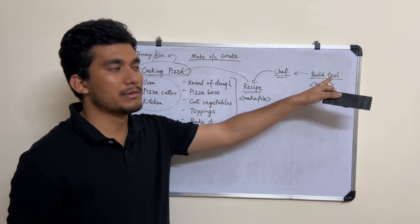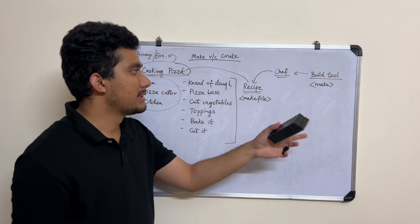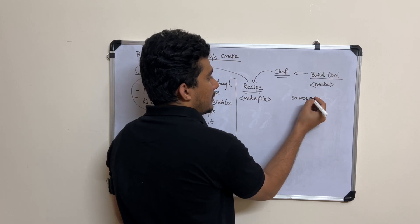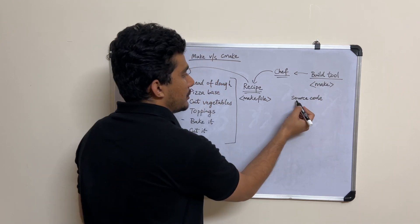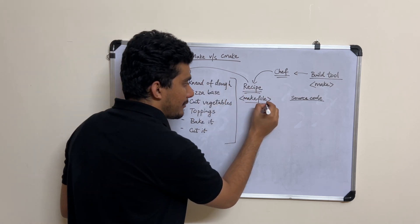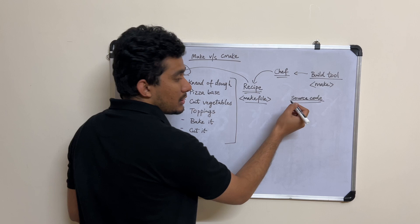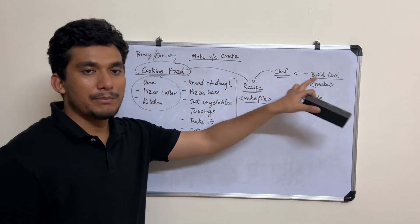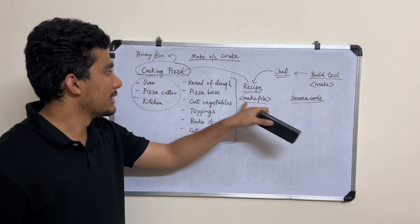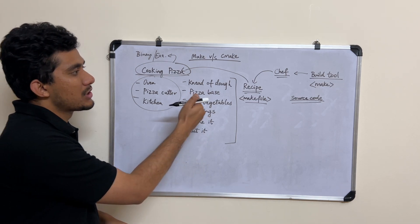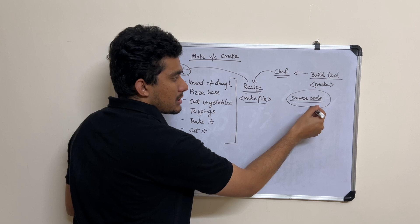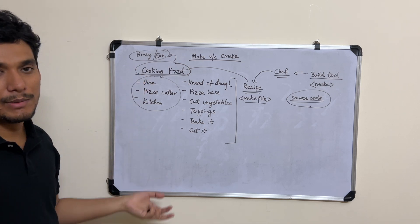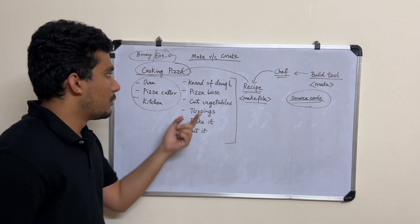Make is just a build tool — an automated tool used for building your projects. You have your source code, and you give instructions in a file called a Makefile on how to use the source code and how to get the binary up. It's a build tool which uses a Makefile containing instructions to convert the source code into your executable or binary — or it can also be libraries, depending on what you've mentioned in the Makefile.